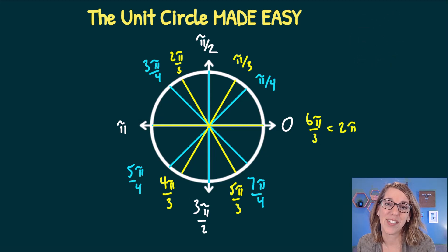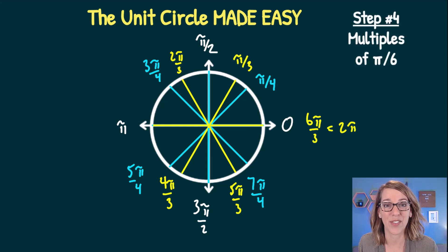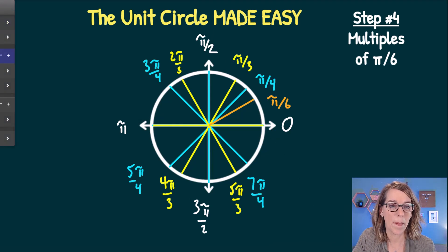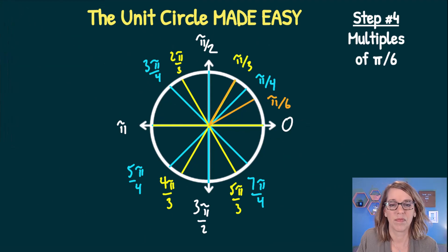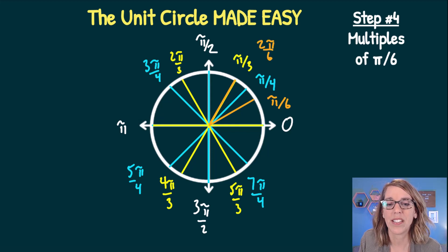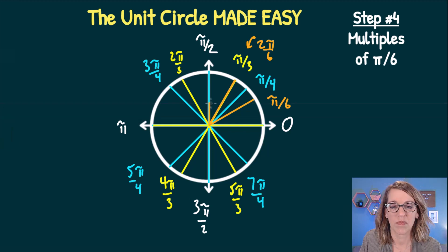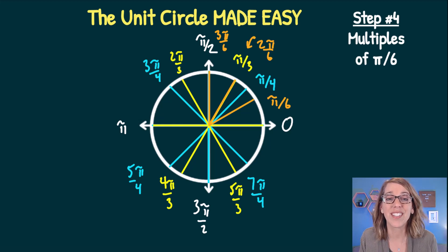There's one more common angle to add: pi-sixths, or 30 degrees. The first one is labeled as pi-sixths. Counting in pi-sixths, the next is 2 pi-sixths, which reduces to pi-thirds. Then 3 pi-sixths, which reduces to pi-halves.